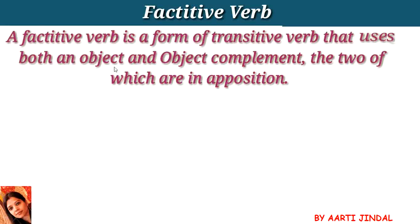Factative verbs hoti hain kyunki inke saath bhi hum ek object ko use karte hain, lekin inke saath hum object ke saath saath objective complement ko bhi use karte hain. Now there are two questions: first, what is an object, and second, what is an objective complement?